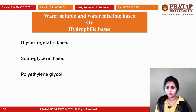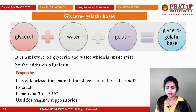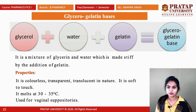Glycero-gelatin bases contain glycerol, water, and a mixture of gelatin — these three ingredients mixed together. The properties of glycero-gelatin bases are: colorless, transparent or translucent in nature, very soft in touch. Because of the presence of glycero-gelatin, it melts at 30 to 50 degrees Celsius, around body temperature.